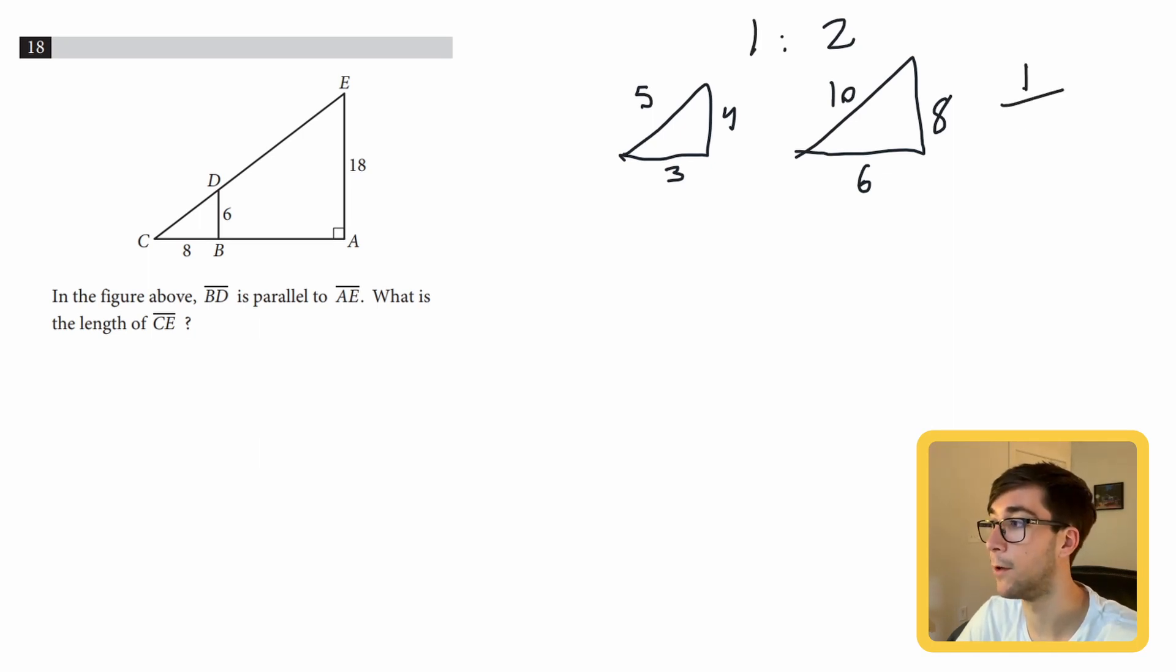You could also say it's 1 over 2. Most likely in a problem, they're not going to tell you that the triangles are similar or give you the information with the sides to find it. Instead, they're going to make you use angles. Here's how you can identify if triangles are similar.